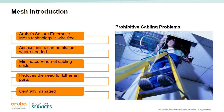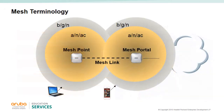Mesh solutions can be used indoors to provide connectivity where there may not be an easy wired infrastructure to deploy in a facility. Mesh solutions may also be used to link buildings together. Mesh has a secure link between mesh nodes — as long as one IAP can see another IAP it can make a mesh connection. Mesh can be managed from the VC or AirWave Central just like any other IAP in the cluster.